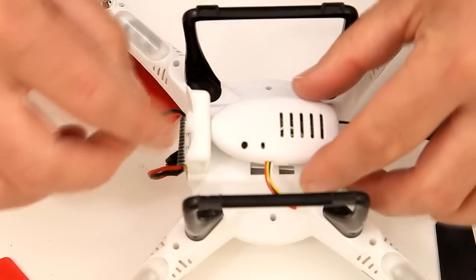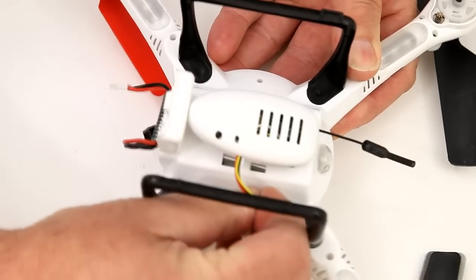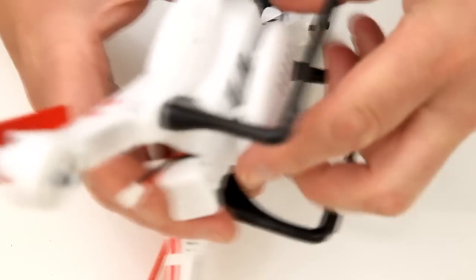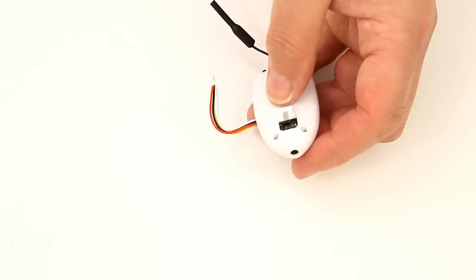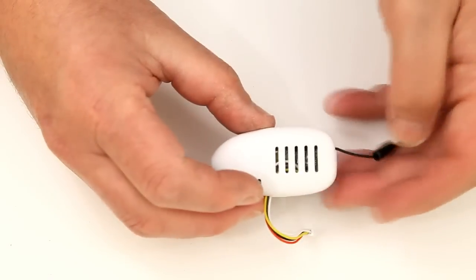So first of all take the camera off the V686G. Just disconnect the cable there and then there's a slide here just to pop it off. Put the cord safely to the side and there we go, that's the camera unit.